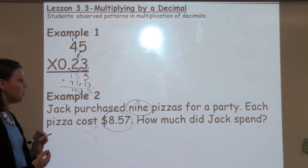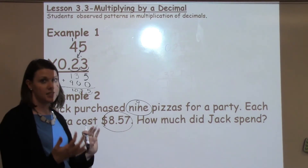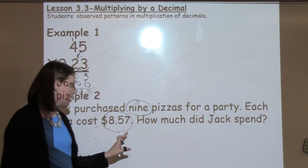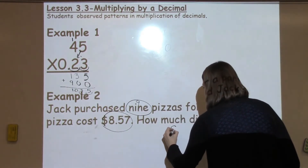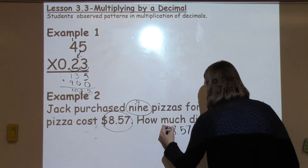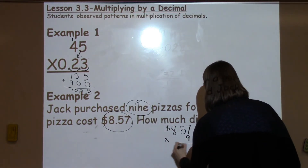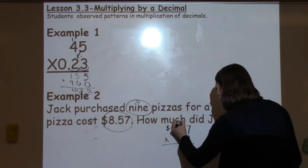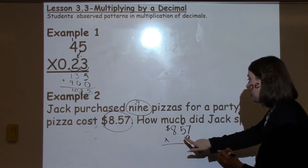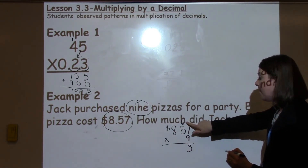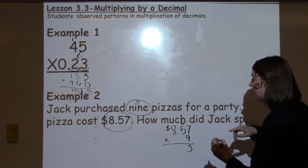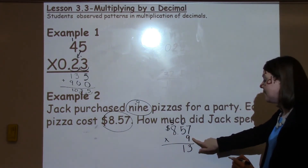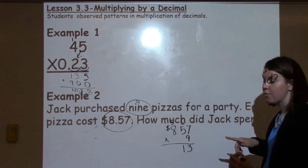Each pizza costs $8.57. How much did he spend? I know I need to figure out that I have 9 of them, so my numbers should be getting larger. I'm going to take $8.57 times 9 pizzas. 9 times 7 is 63, put my 3 down, carry my 6. 9 times 5 is 45, plus 6 more is 51. Then 9 times 8 is 72, plus 5 more is 77.